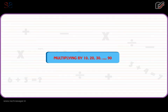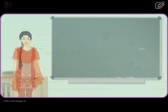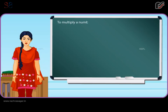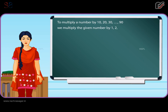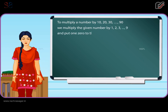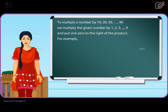Multiplying by 10, 20, 30 ... 90. To multiply a number by 10, 20, 30 ... 90, we multiply the given number by 1, 2, 3 ... 9 and put one zero to the right of the product. For example, 5 × 10 is equal to 50, and 8 × 70 is equal to 560.